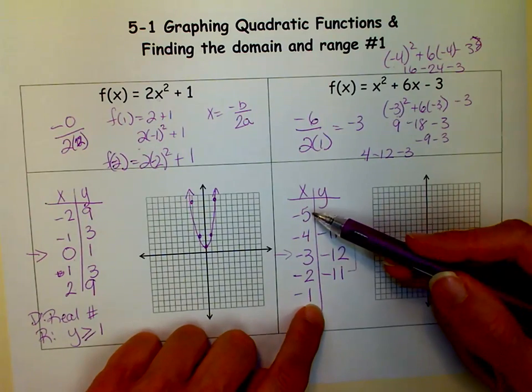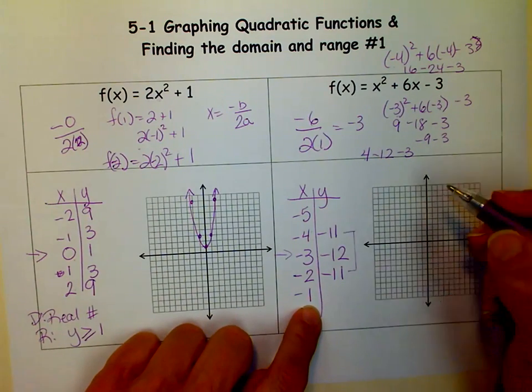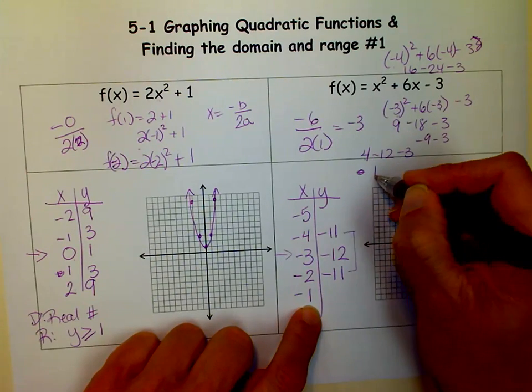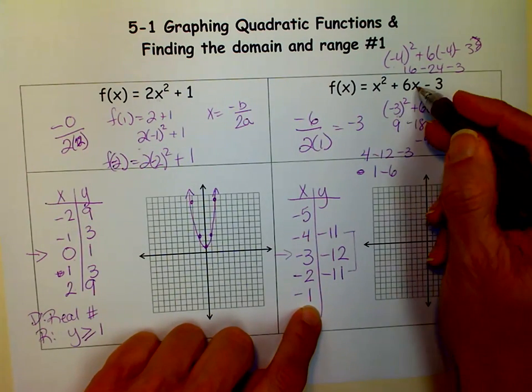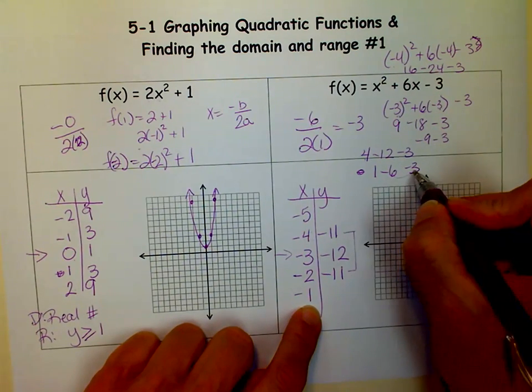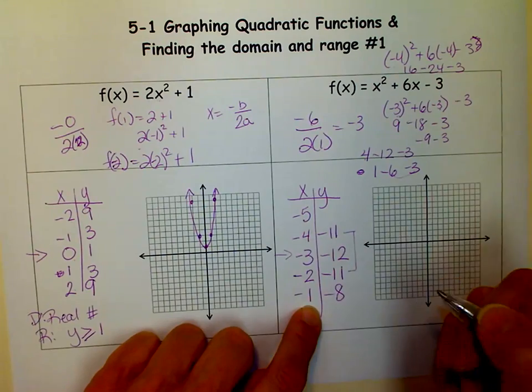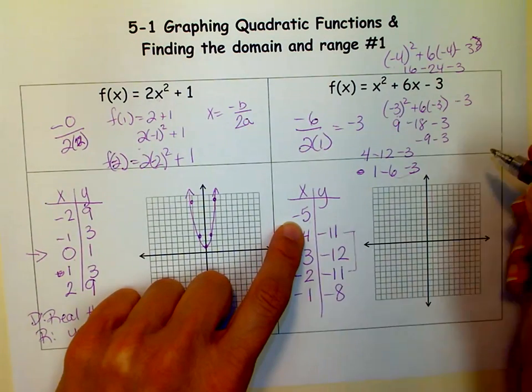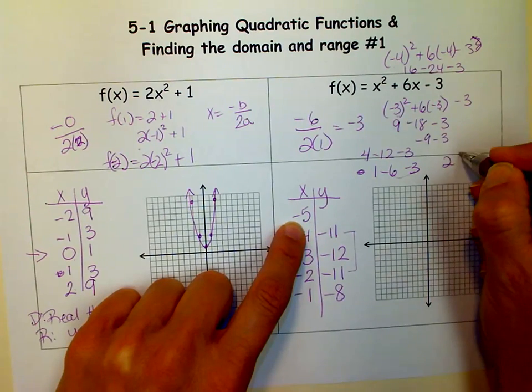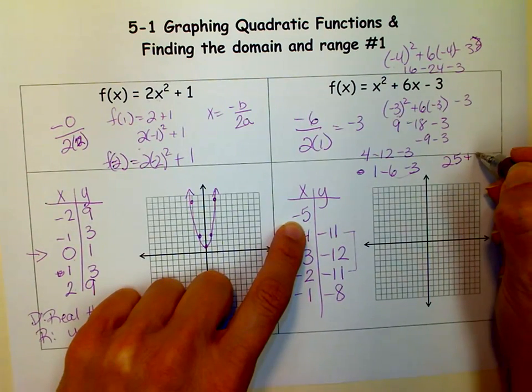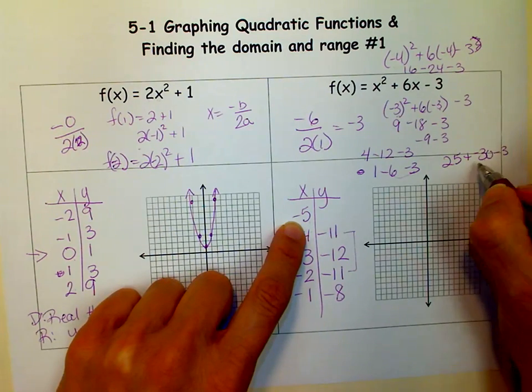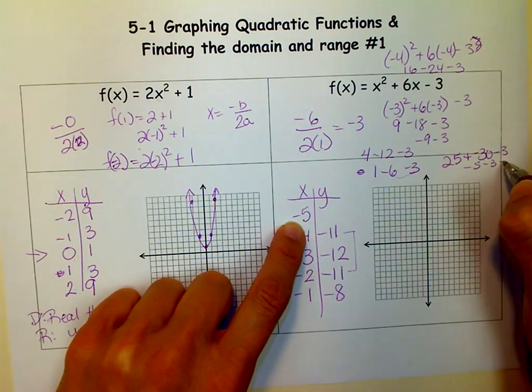So I should get the same thing for the 1 and the 5. So when I put a negative 1 in, I get negative 1 squared, which is 1 minus 6. When I get 6 times negative 1 minus 3, so that's negative 5, that's negative 8. If I put the negative 5 in, I should get the same thing. I should get a negative 8. So negative 5 squared is 25 plus a negative 30 minus 3. 5 minus 30 is negative 5, minus 3 is negative 8.